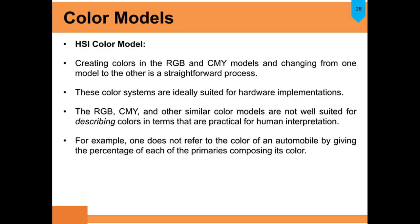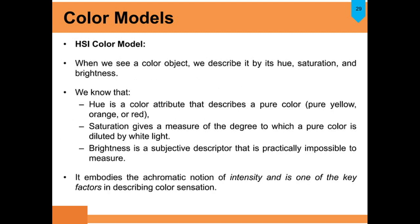In the HSI model, RGB and CMYK models are ideally suited for hardware but are not suited for describing colors in a way practical for human interpretation. For example, one does not describe the color of a car by giving the percentage of each primary composing its color. If we want to purchase a blue sari, we say 'blue' — we don't say 20% green, 40% cyan, 70% magenta. So to describe colors, we need the HSI model. When we see a color object, we describe it by its hue, saturation, and brightness.